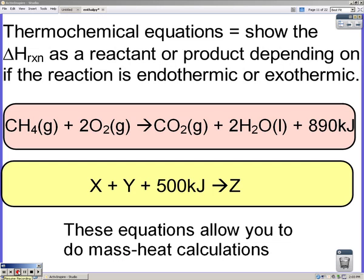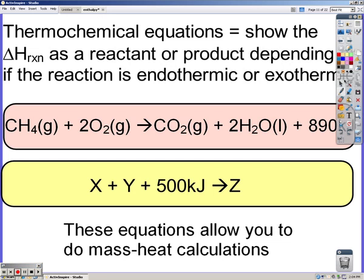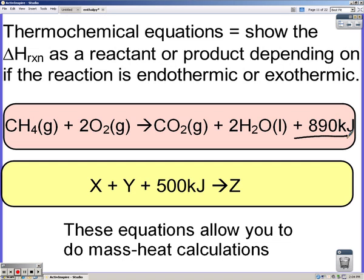Thermochemical equations show delta H or heat as reactants or products depending on if the reaction is endothermic or exothermic. If you look at this top reaction we have 890 kilojoules. It's a product which means it's going to be given off in the reaction.